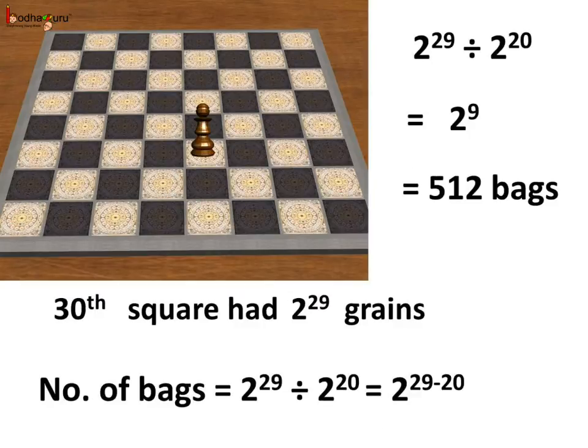Similarly, for the thirtieth square, the number of bags would be 2 to the power 29 divided by 2 to the power 20, which is equal to 2 to the power 29 minus 20. Hence, 2 to the power 9, which means 512 bags.